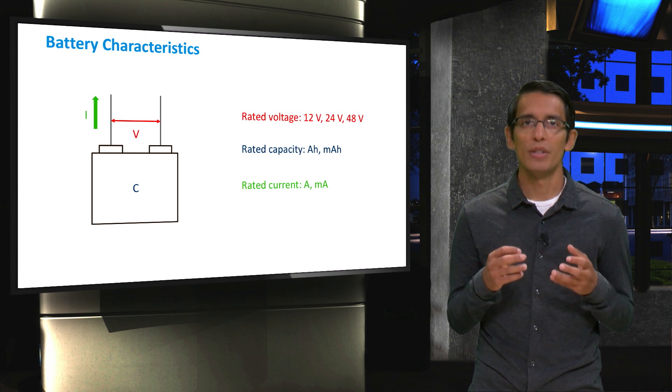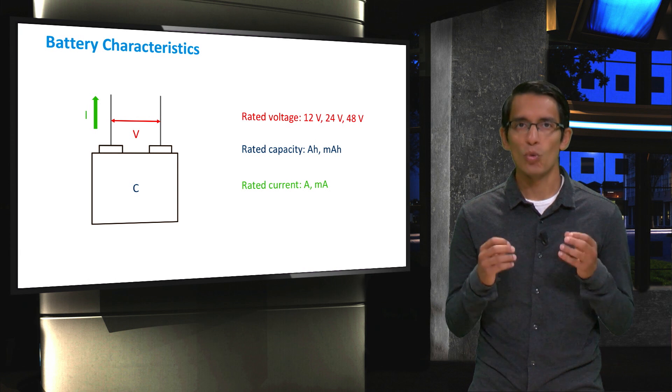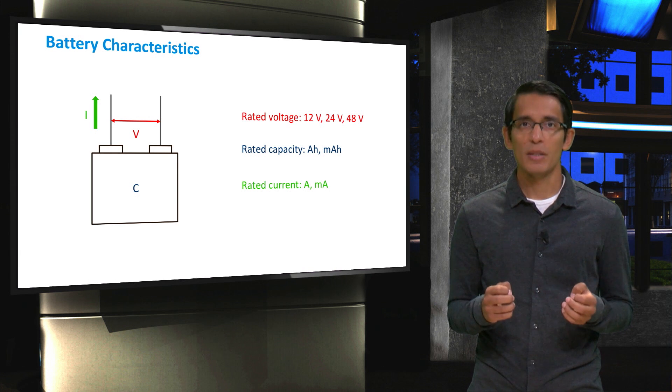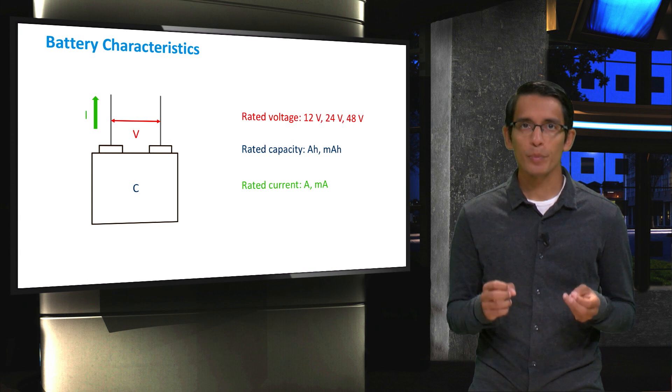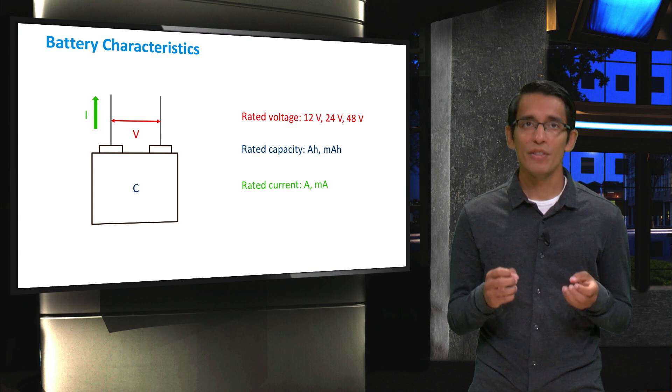The third parameter that is used to characterize a battery is its rated current. This is expressed in amperes or milliamperes. This is basically the maximum current that the battery can handle. Currents exceeding the rated current may damage the electrode of the battery.